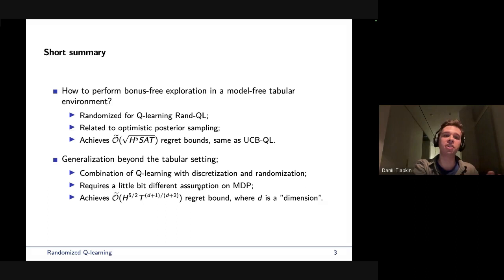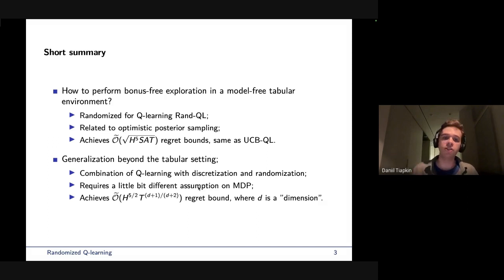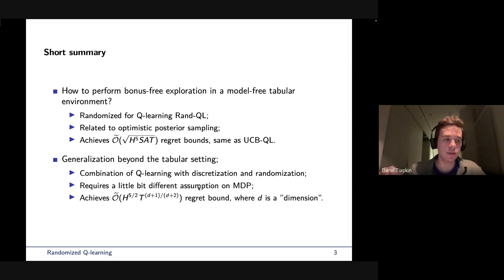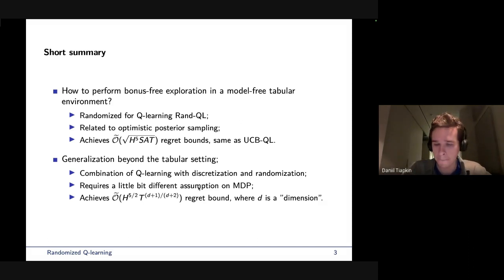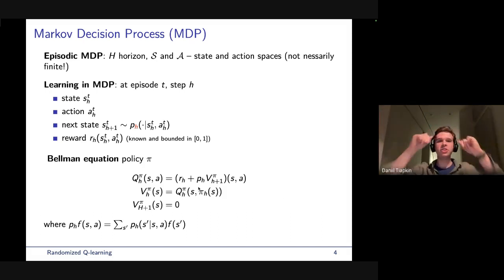A very interesting additional result is that this can be very easily generalized to the more general setting of metric spaces with adaptive discretization. This algorithmic technique can be very easily plugged into existing algorithms for metric spaces and achieve the same regret guarantees.